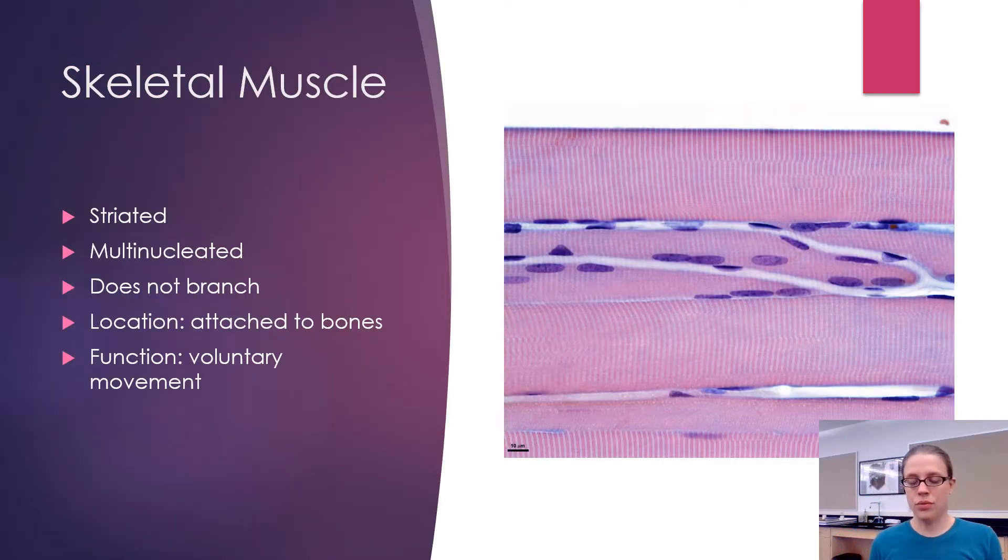Moving on to muscle tissue. This is skeletal muscle. You can tell because it's striated. Striated just means that it has these light and dark bands of color. Also it's multinucleated. The nuclei are all of these purple guys that are out along the edges. Skeletal muscle has a lot of nuclei. As most of you probably know, you find skeletal muscle attached to bones. The function of skeletal muscle is to allow for voluntary movement.